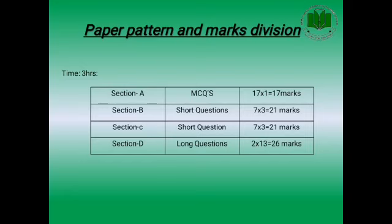Same is the case with Section C — it is also of short questions. You will have to solve 7 out of 10 short questions, each carrying three marks, so total marks for this section are 21. The last section comprises long questions; you will have to solve two out of three, each carrying 13 marks, so total marks for this section are 26. In this way, total marks for the paper of chemistry will be 85.